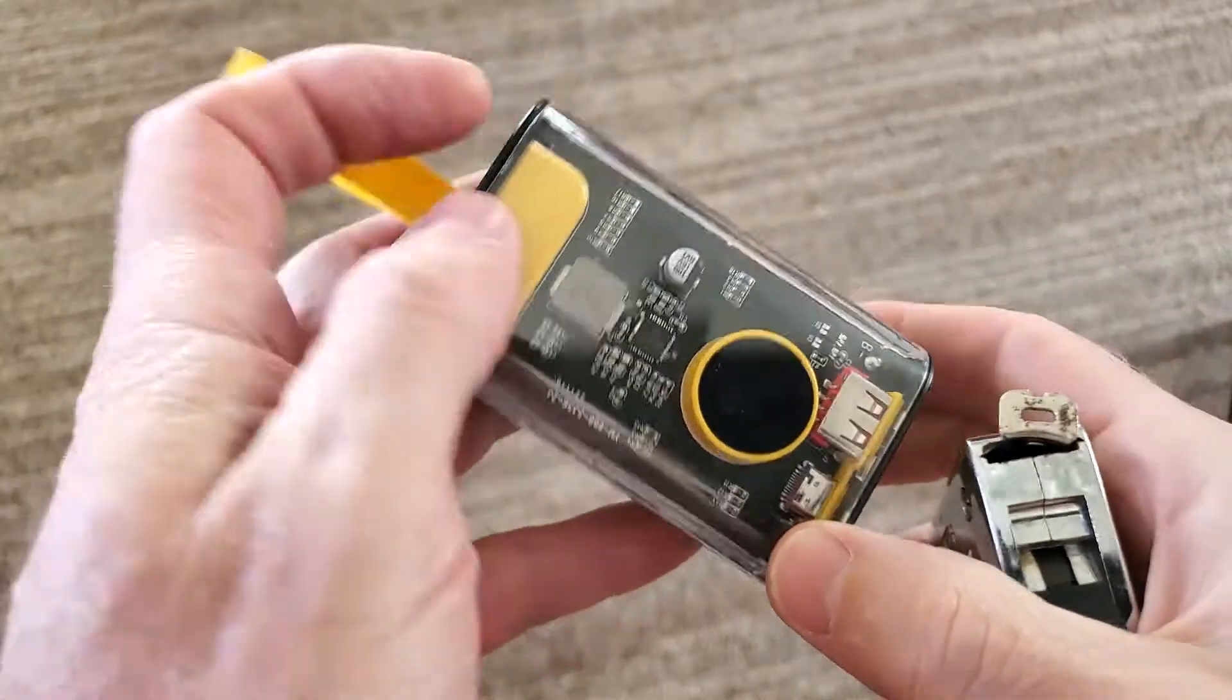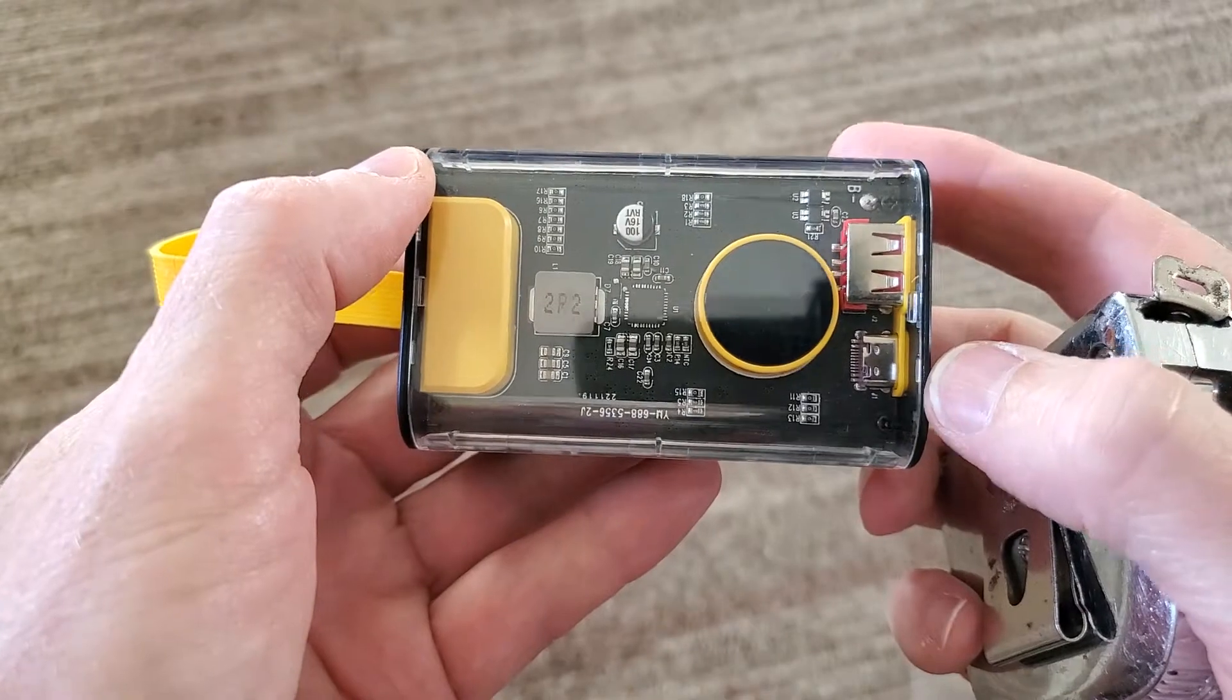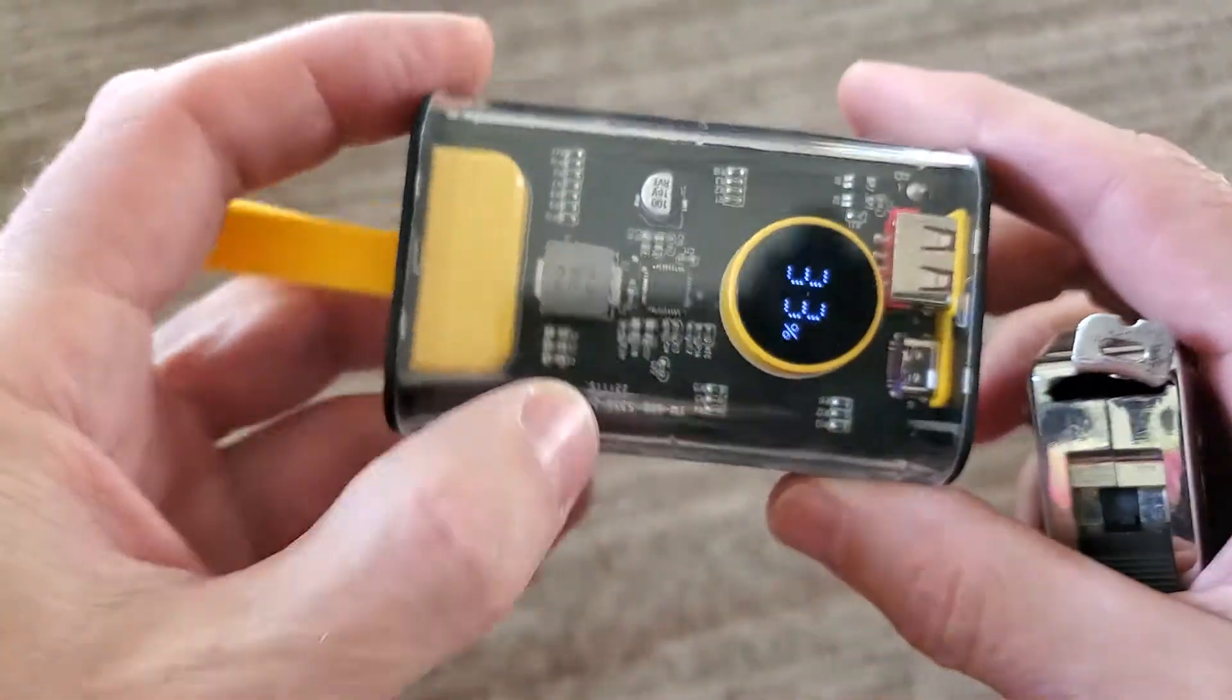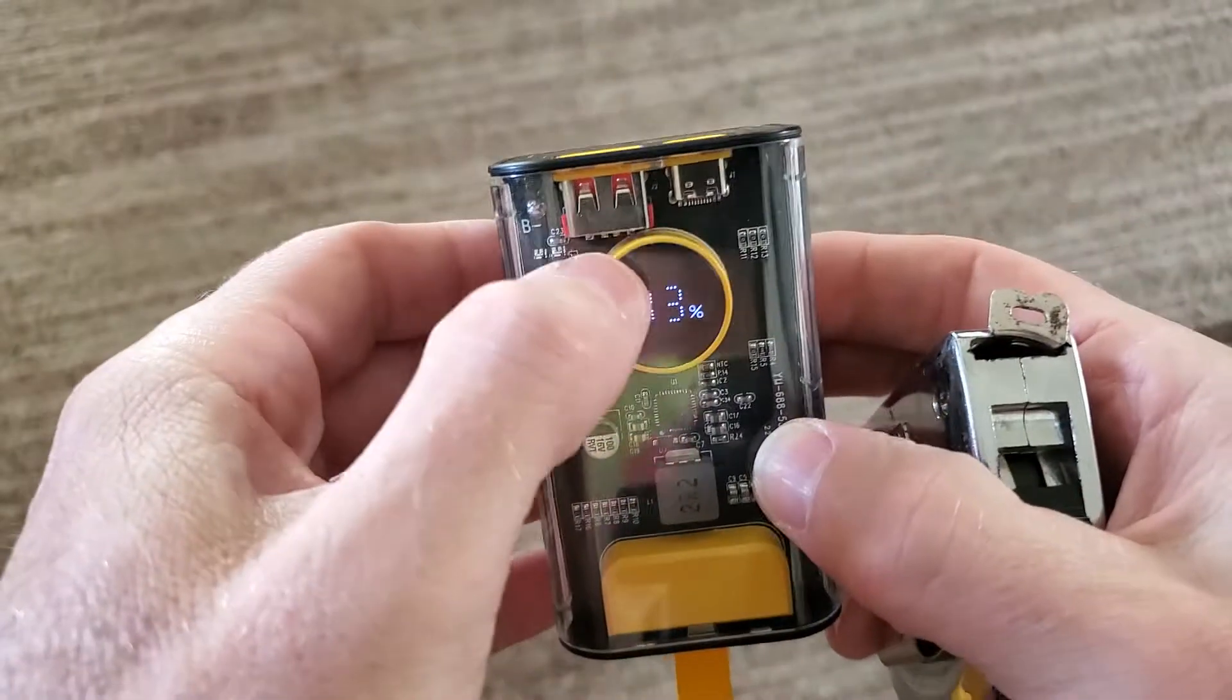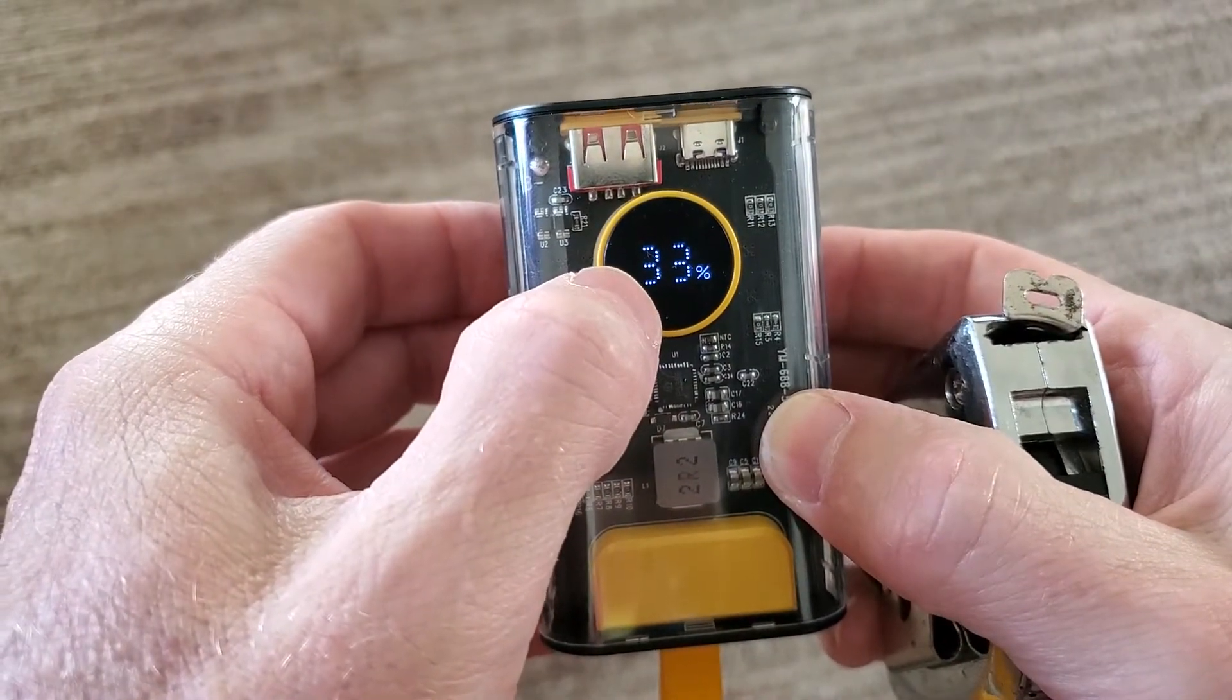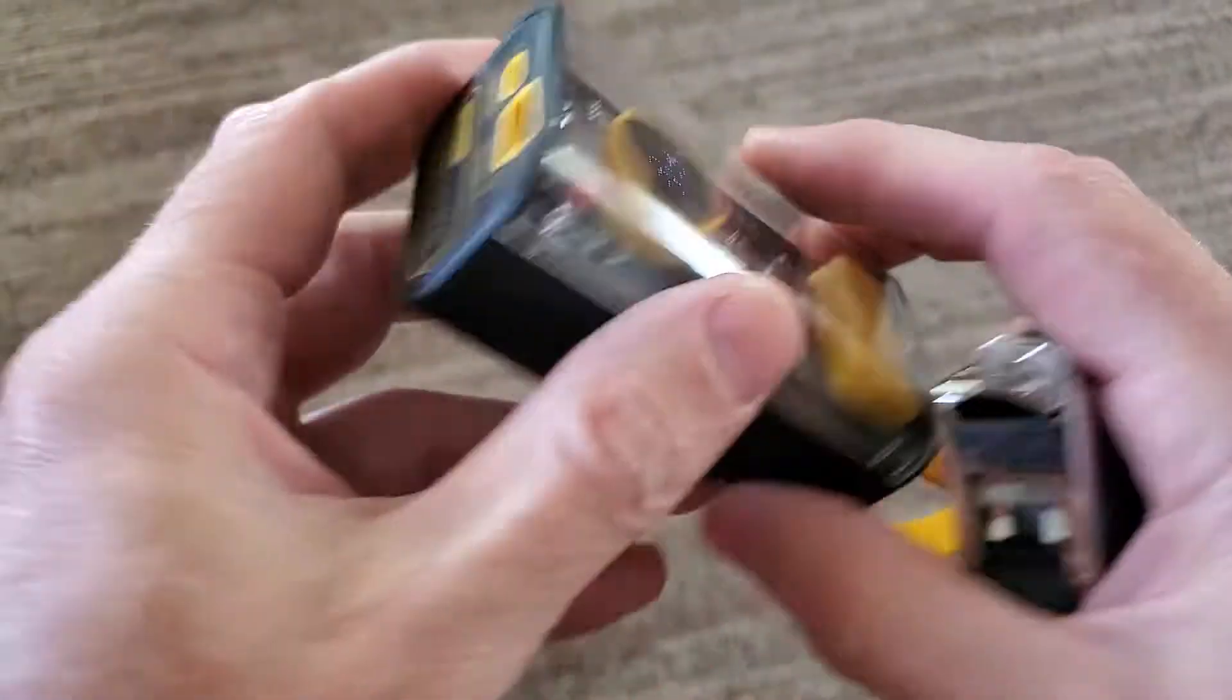Okay, in this video we are reviewing the power bank - 10,000 milliamp hours. It comes with a little LED display that tells you how much power is remaining in the bank, which in my case is 33%. You have your ports here.